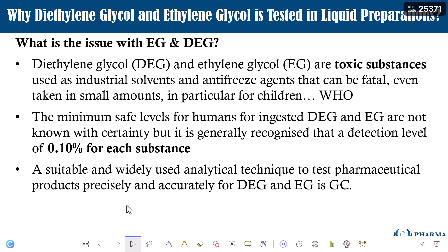A suitable and widely used analytical technique to test pharmaceutical products precisely and accurately for diethylene glycol and ethylene glycol is gas chromatography. TLC is not the specific technique for analysis of these substances because TLC cannot separate or quantify them accurately. Therefore, gas chromatography is highly recommended for analysis of ethylene glycol and diethylene glycol.